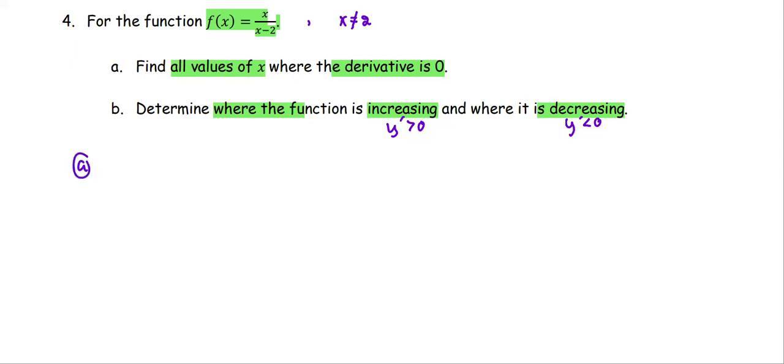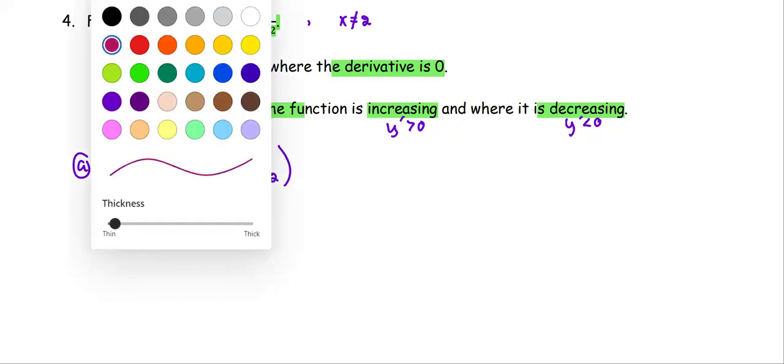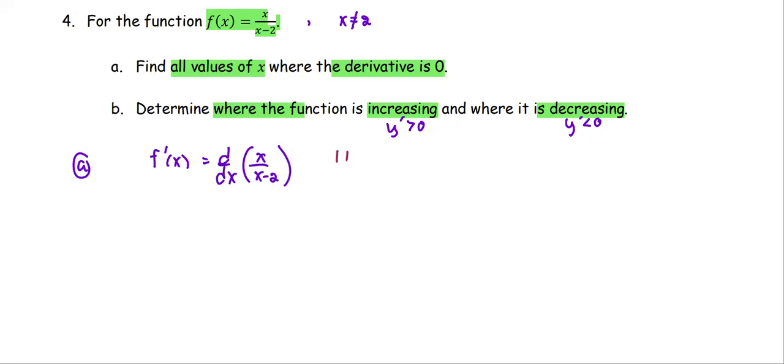In part a, when we find the derivative f prime, we find the derivative with respect to x of x/(x-2). It is in the quotient form. We're going to apply the quotient rule. We call the top high, the bottom low.